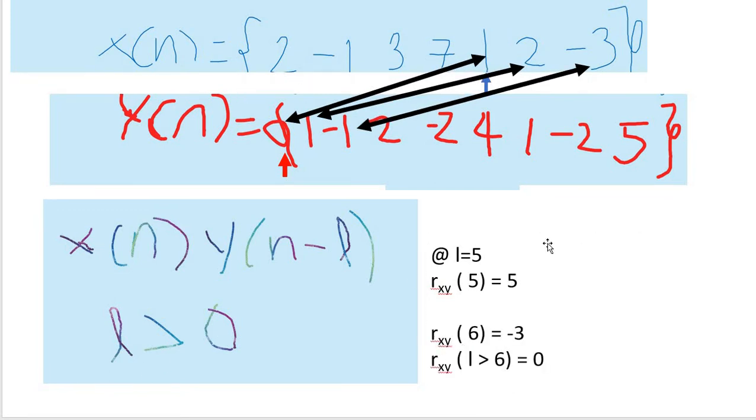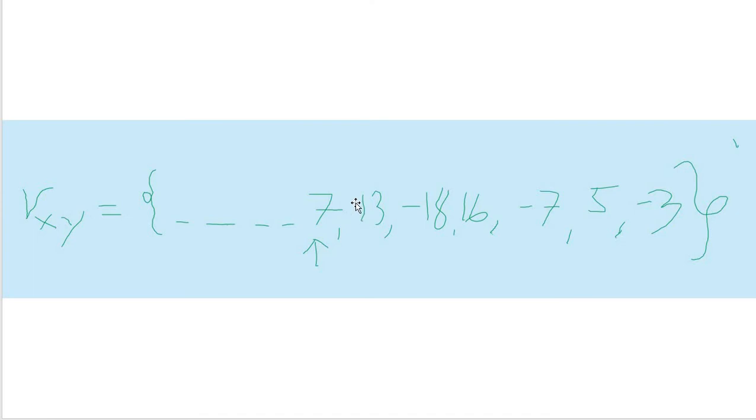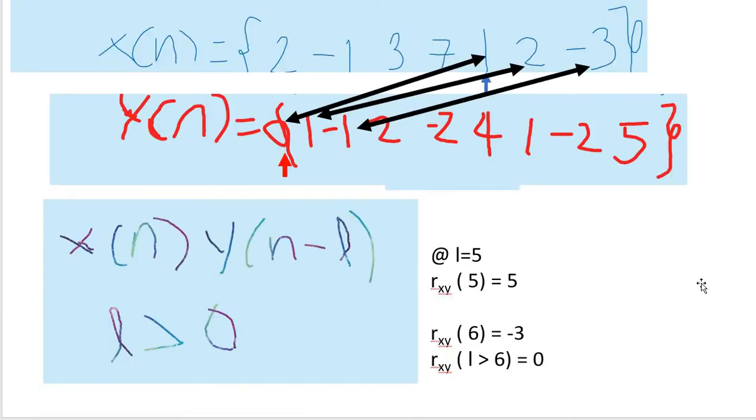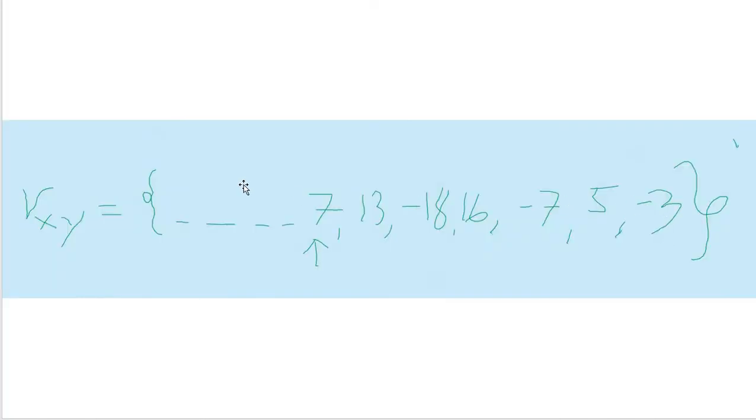So, when L equals 6, I did not put it up. But when L equals 6, the result would be -3. And when L would be greater than 6, so 7, 8, and 9, the result would be just 0. As you can see, what we did is just the cross-correlation. As you can see, L equals 1 would be 13, 2, -18, up to the 6. This one. -3.